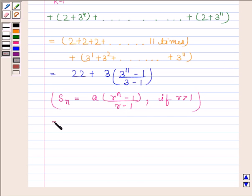Now, this is equal to 22 plus 3 into 3 to the power 11 minus 1 upon 2. Now, this can further be written as 22 plus 3 by 2 into 3 to the power 11 minus 1.